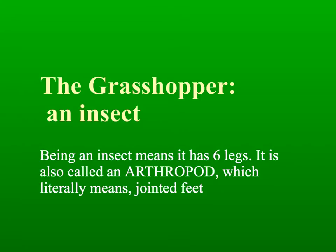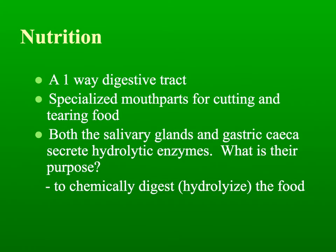Now take up the fill-in-the-blank notes. These deal with the different body systems — organ systems, circulatory system, respiratory system, digestive tract — for the grasshopper, and define a few of the more unfamiliar parts. Being an insect, it is going to have six legs, and it's called an arthropod. I do want you to remember that arthropod is the Greek meaning for jointed feet. For nutrition, they have a one-way digestive system: it goes in through the mouth, all through the digestive system, and out through the anus. This is not like some organisms that eat and excrete from the same orifice — this has a one-way system.